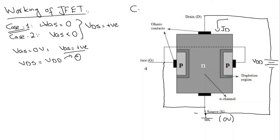The current ID is going to flow in this direction — this is conventional current. We know that there are two types of current: conventional current and electronic current. Conventional current flows in the opposite direction to electronic current. Conventional current flows in the direction of positive charges or holes, while electronic current flows in the direction of electrons. Because we have connected a positive terminal here, electrons are attracted toward it, so the electronic current flows in that direction and the conventional current ID flows in the opposite direction.